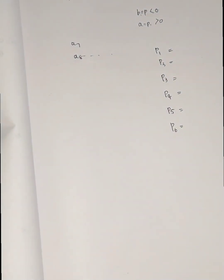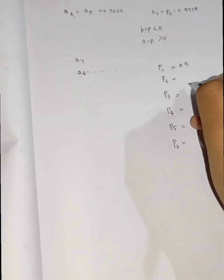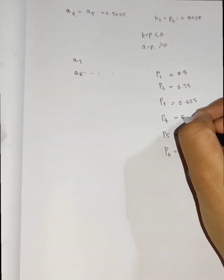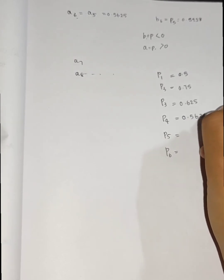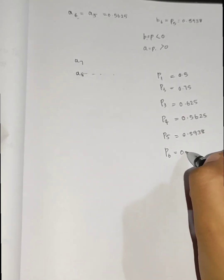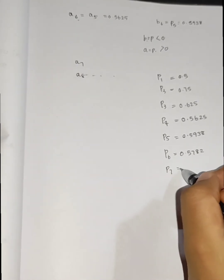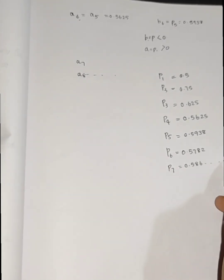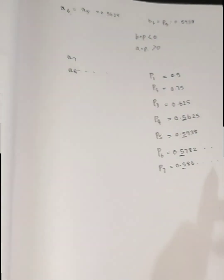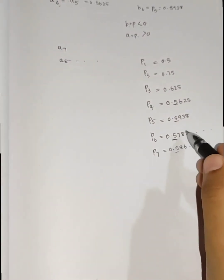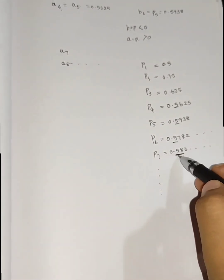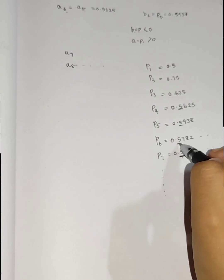Summarizing the iteration results: P1 = 0.5, P2 = 0.75, P3 = 0.625, P4 = 0.5625, P5 = 0.5938, P6 = 0.5782, P7 = 0.586. The sequence is converging to approximately 0.586.